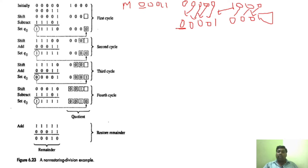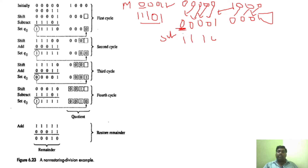After shifting, we check the sign bit. Since the sign bit is 0, we perform subtraction. To subtract, we take the 2's complement of M (00011), which gives 11101. We then add this 2's complement value to A.